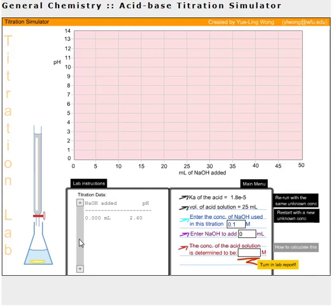Here you have where your titrant added will be tabulated along with the corresponding pH at that time. And then over here in this area is where you can change some of those settings indicated in the instructions. In the blue area here, it says to enter the concentration of sodium hydroxide used in this titration.